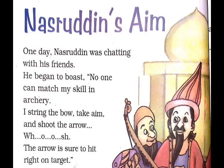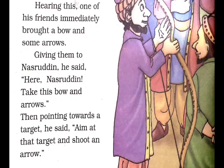He was boasting about his archery skills, saying: I string the bow, take aim and shoot the arrow. Immediately, one of his friends brought a bow and some arrows, giving them to Nasruddin.